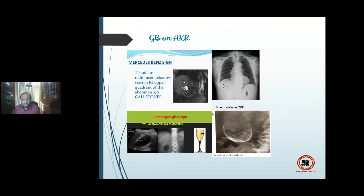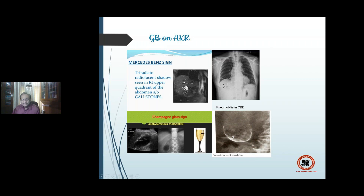Here you can see the Mercedes Benz sign — air trapped inside the stone. Or emphysematous cholecystitis where you find gas bubbles like in a champagne glass. Or the porcelain gallbladder with a calcified wall. Or pneumobilia in the common bile duct marked with an arrow.